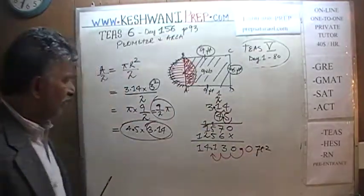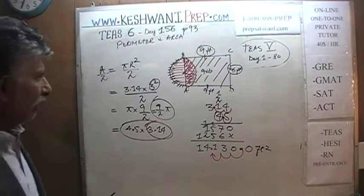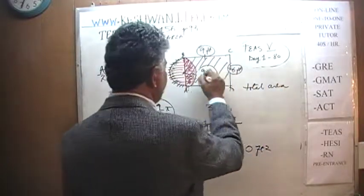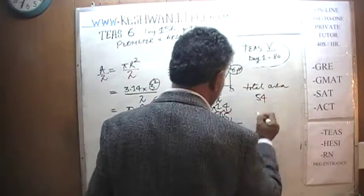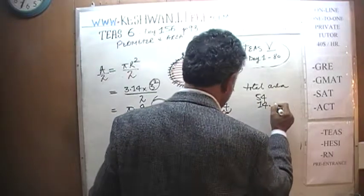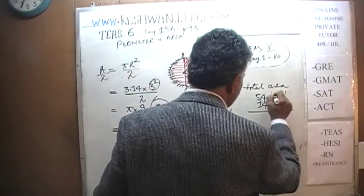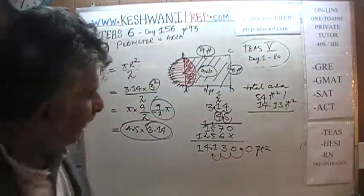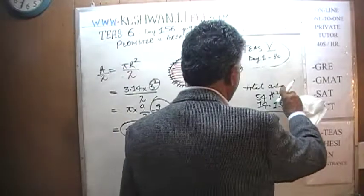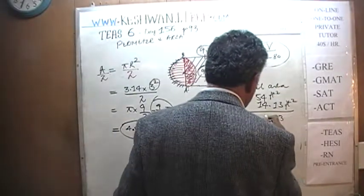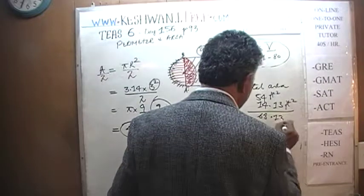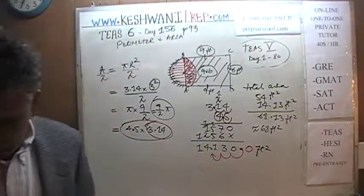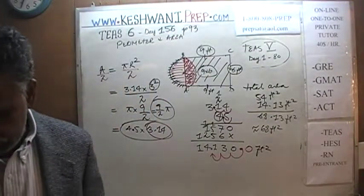This 14.13 square feet represents the half circle. So the total area is the area of the rectangle — 54 square feet — plus 14.13 square feet. We add them up: 0.13 comes down, 4 plus 4 is 8, giving approximately 68 square feet. The area of this figure is approximately 68 square feet.